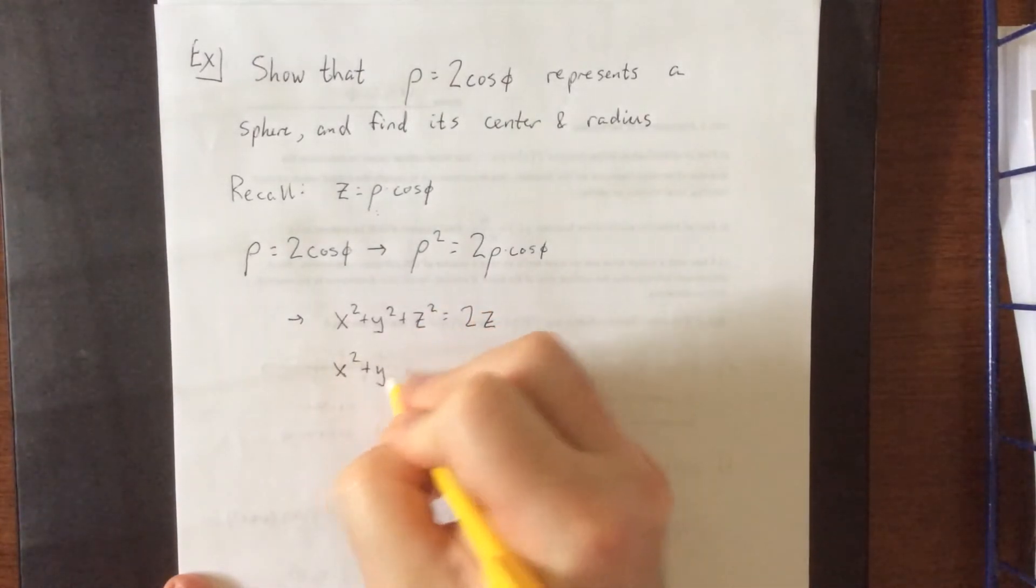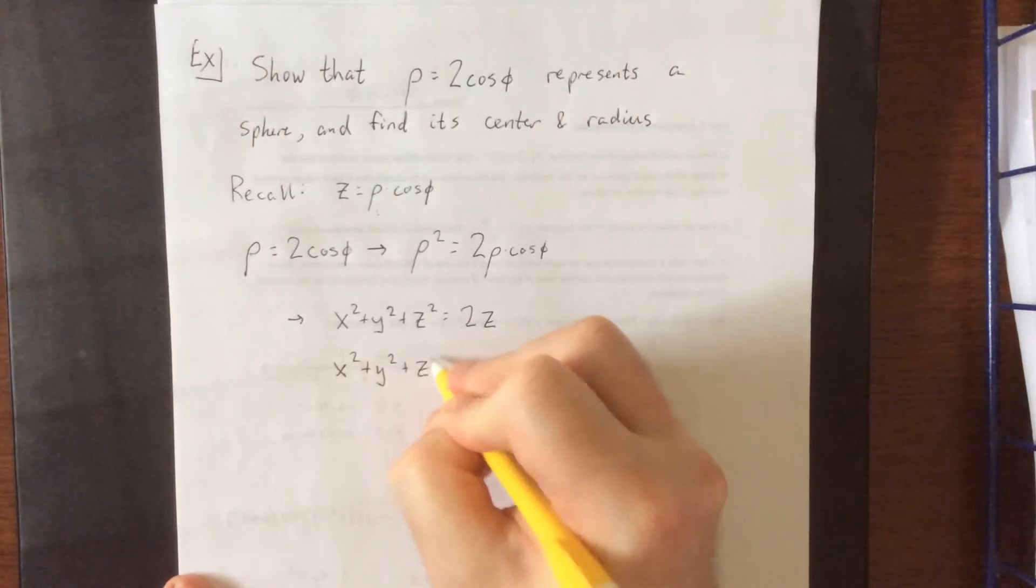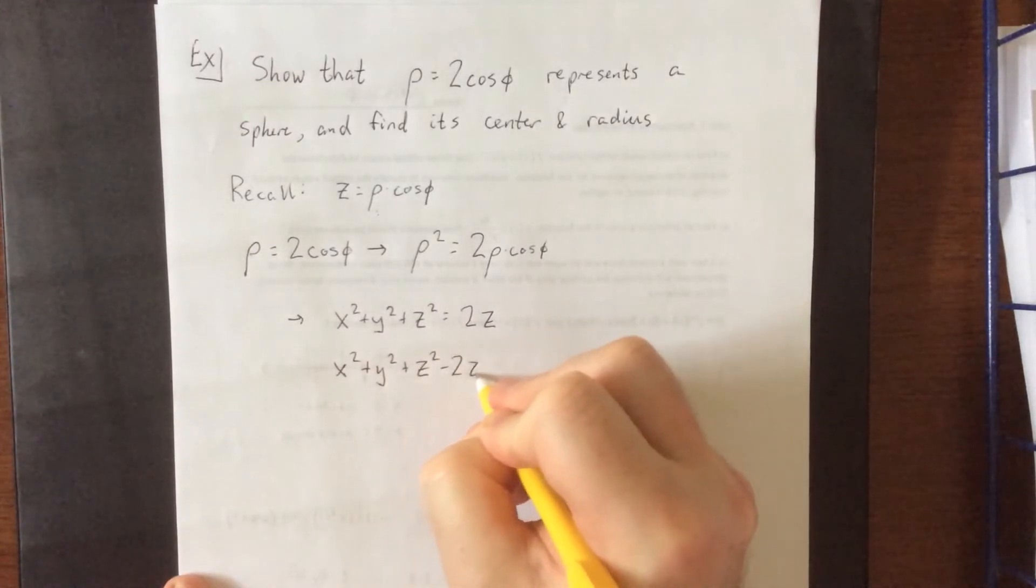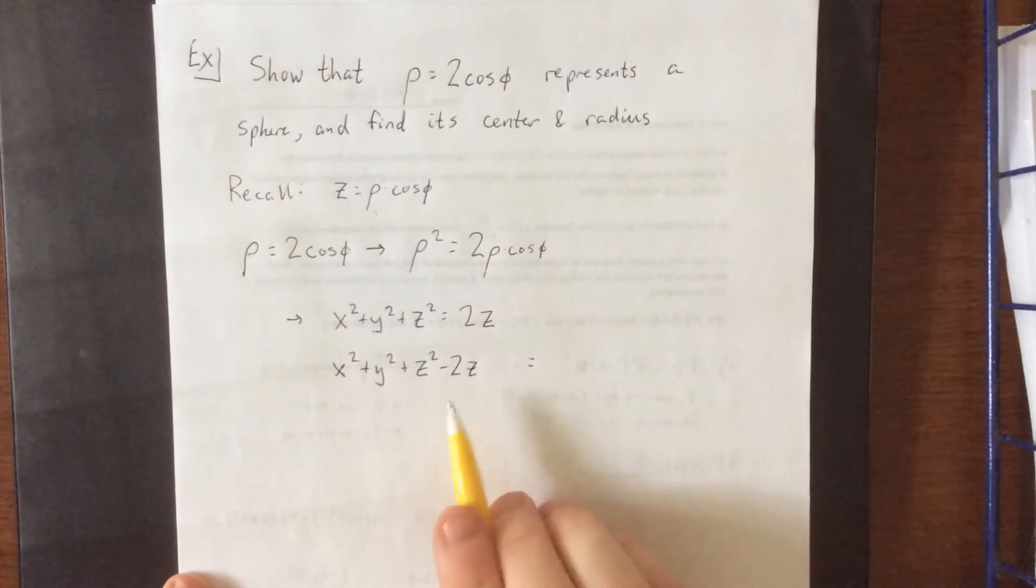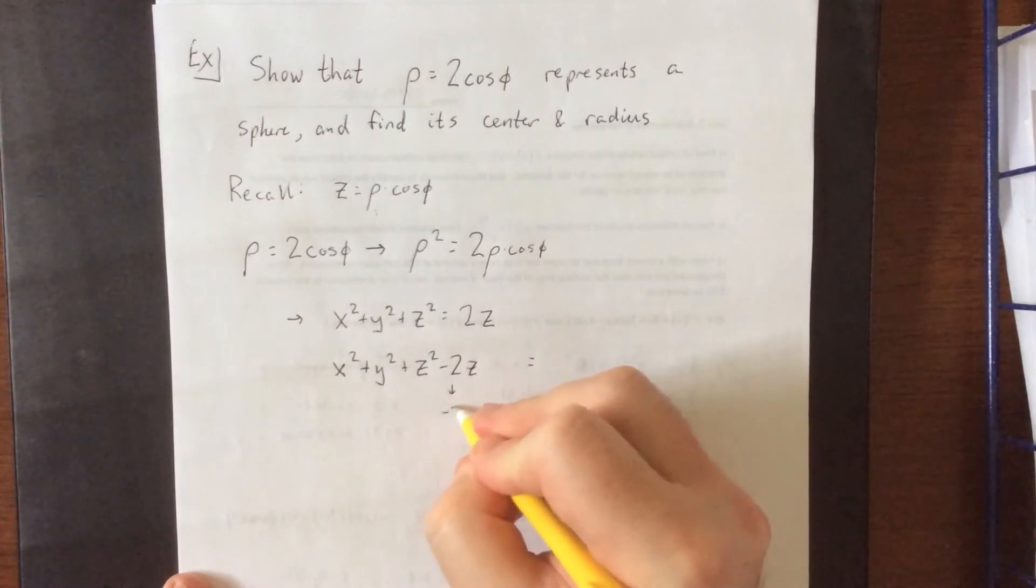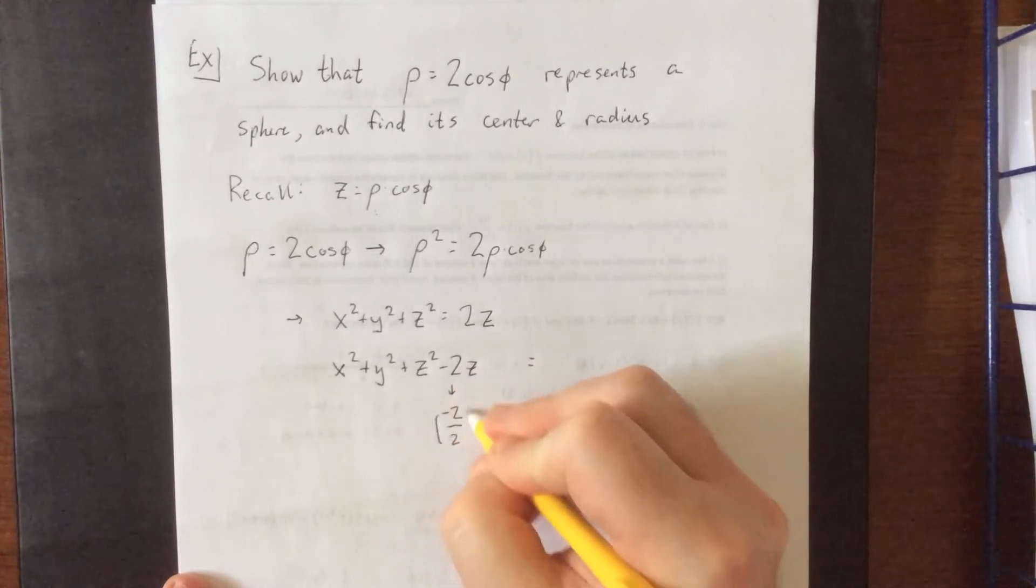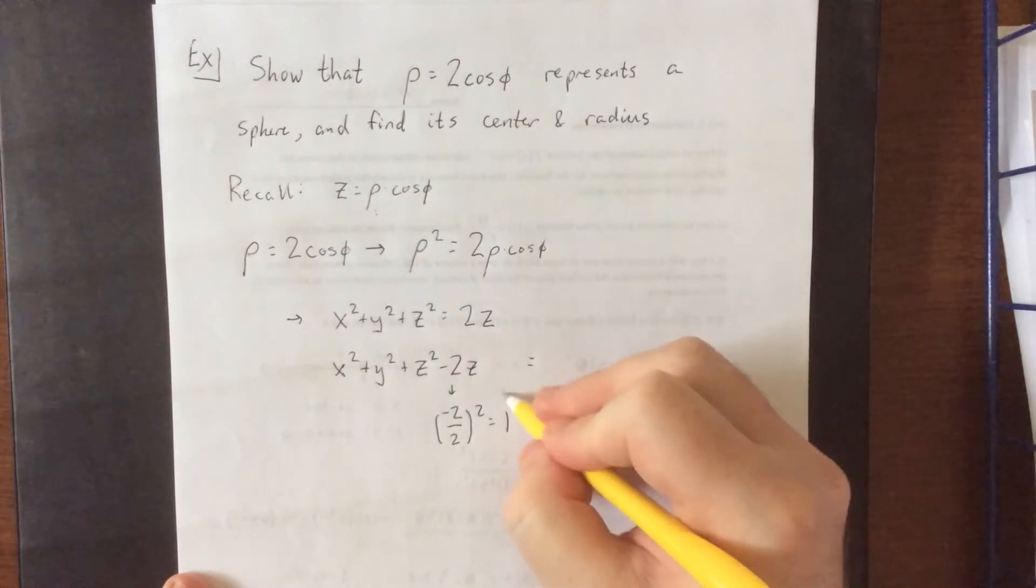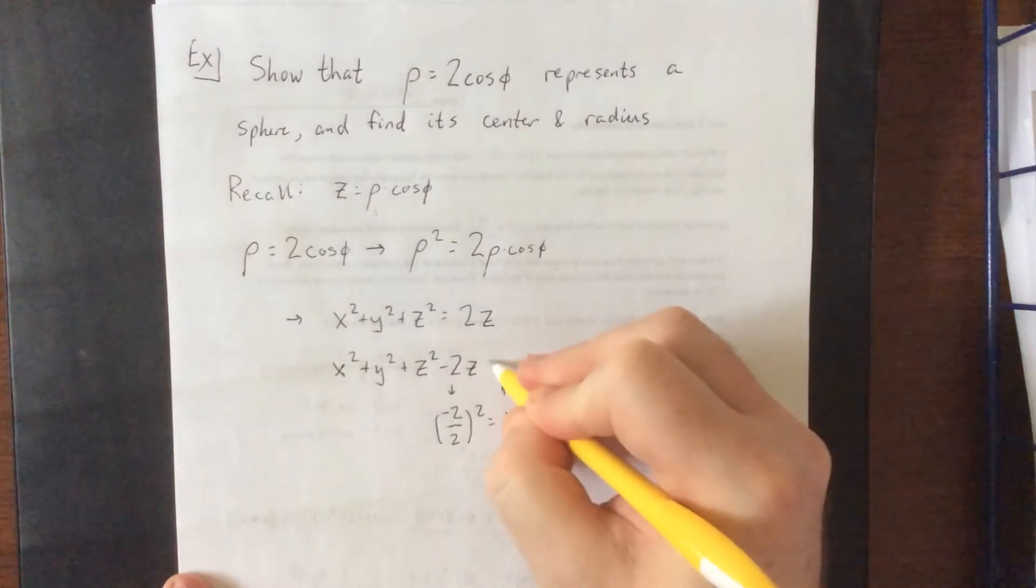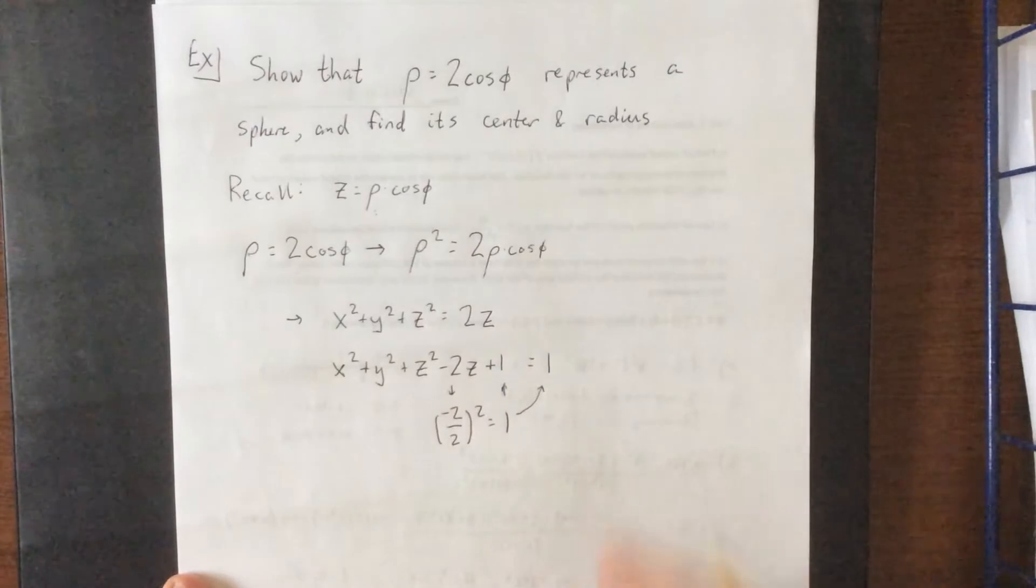So what I'm going to do is rewrite this in such a way where the z terms are grouped together, and I'm going to leave a little blank here so that we can complete the square using this negative 2z. So to complete the square, we divide the coefficient of z by 2 and square the result, we get 1. We're going to add that both to the left-hand side to complete the square as well as the right-hand side to balance it out.